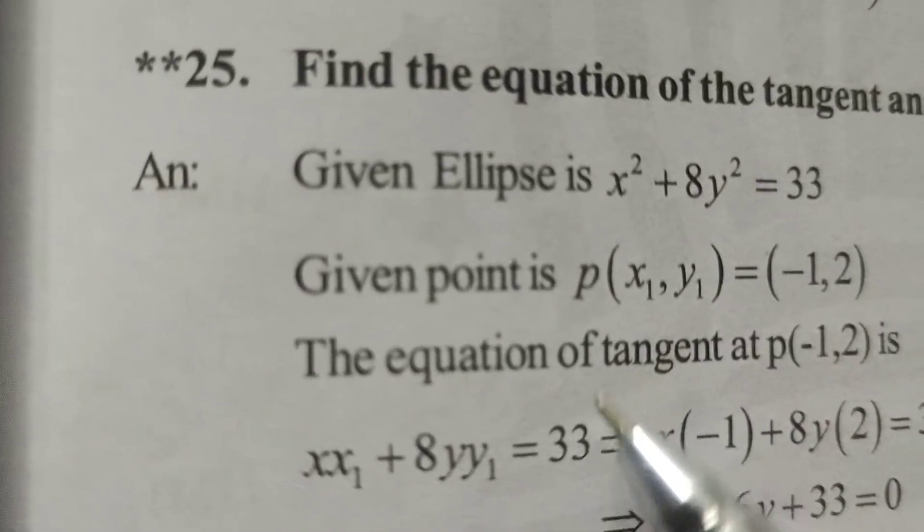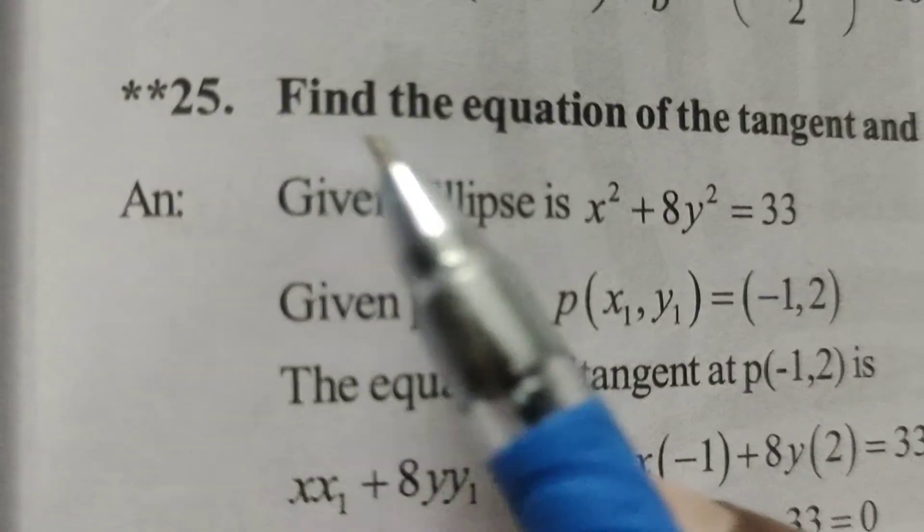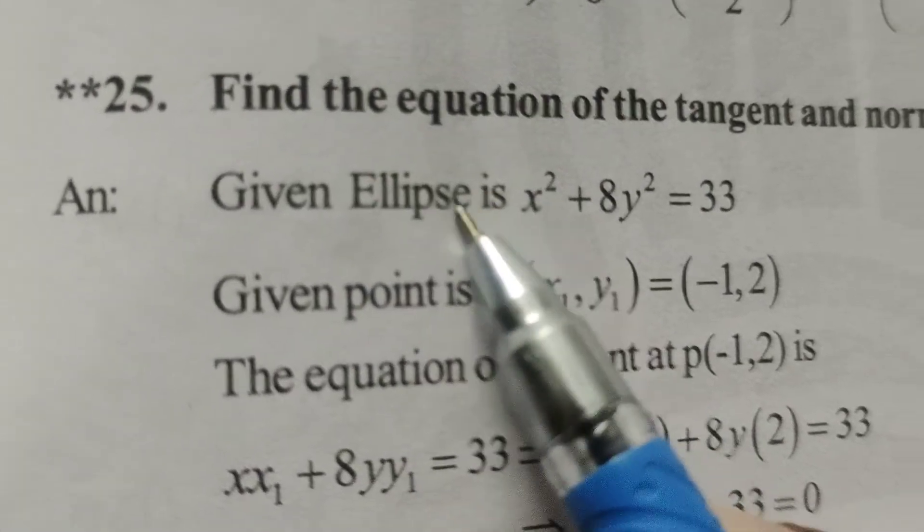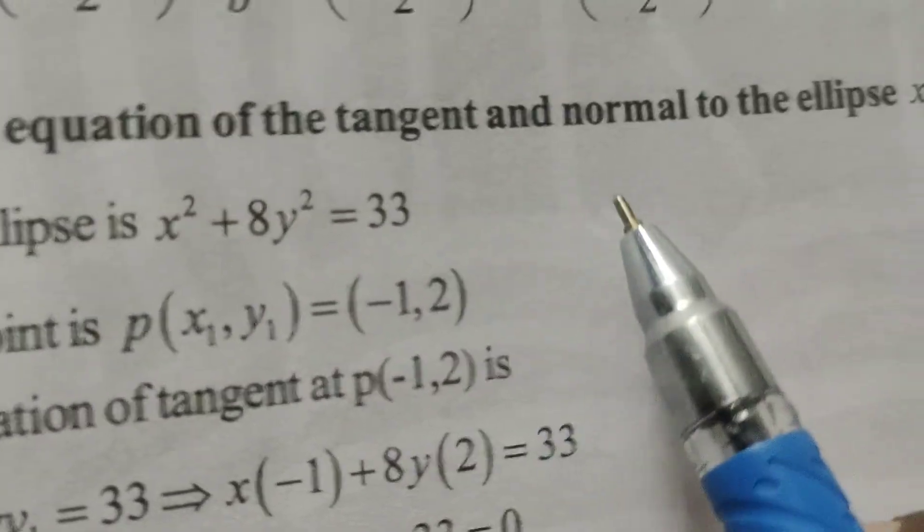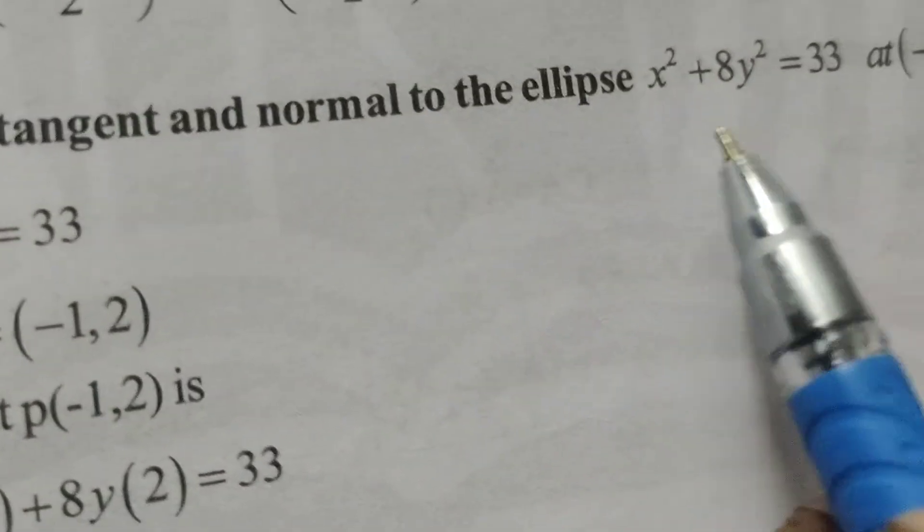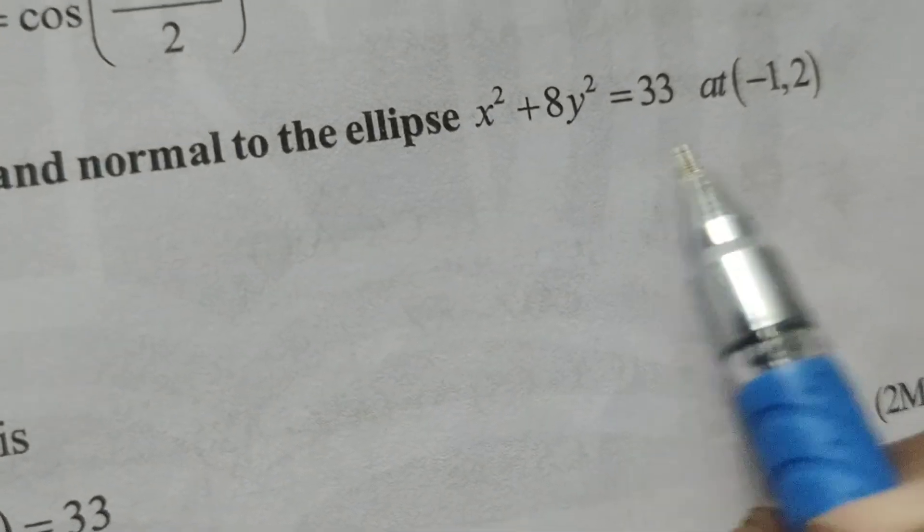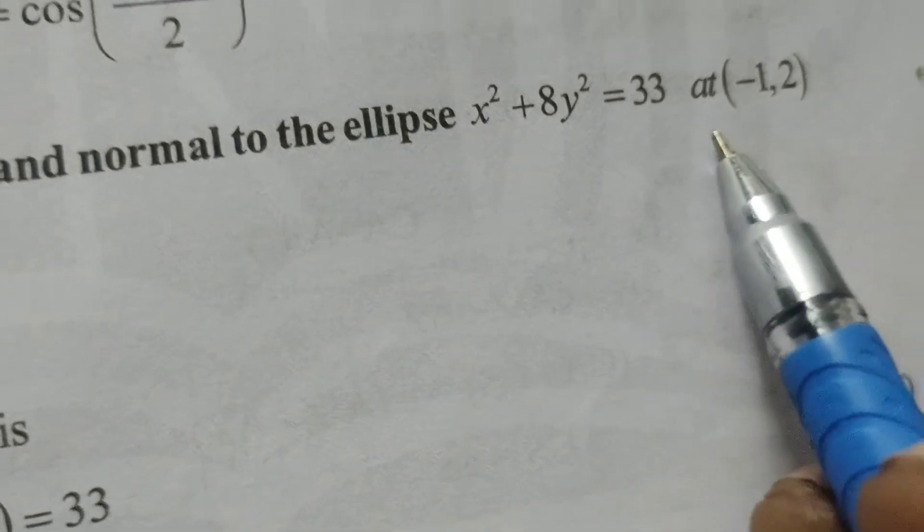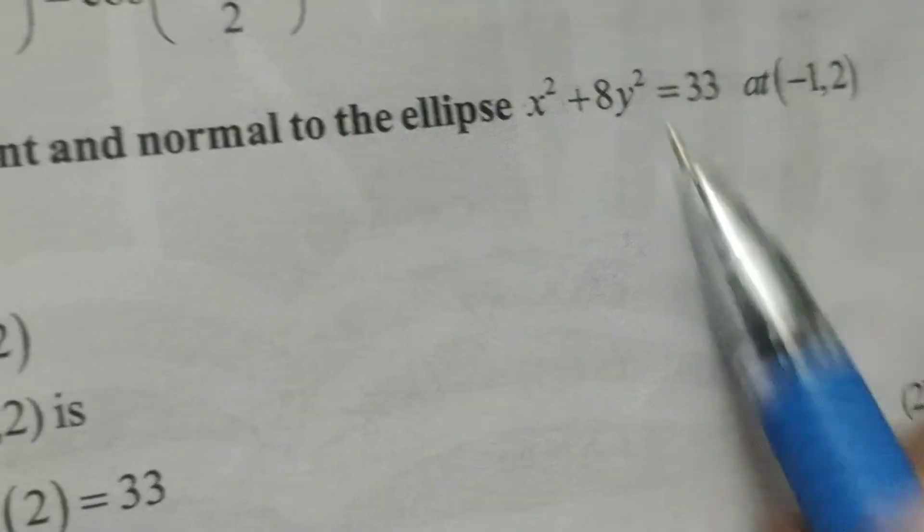This is Dr. Ayti. Now, today we are going to discuss finding the equation of the tangent and normal to the ellipse x² + 8y² = 33 at the point (-1, 2).